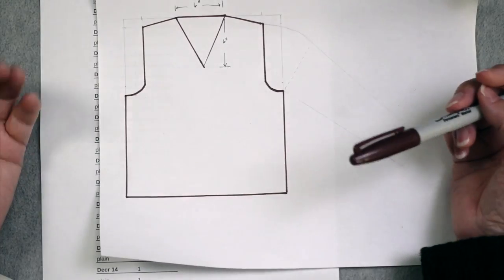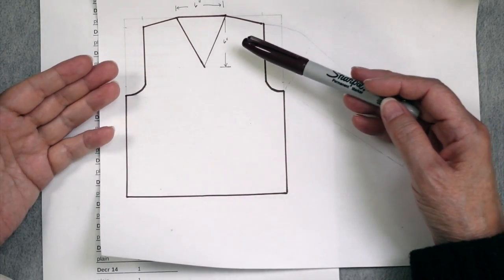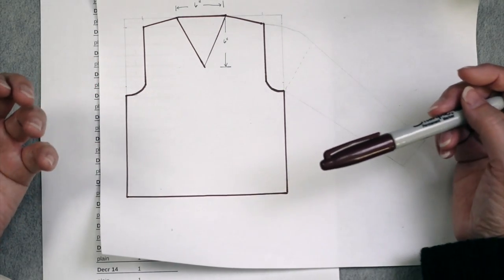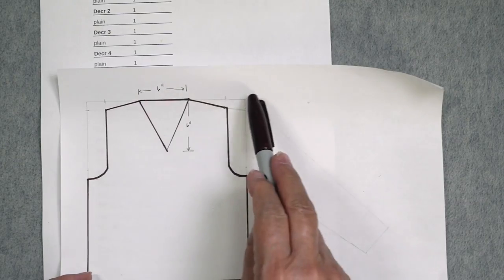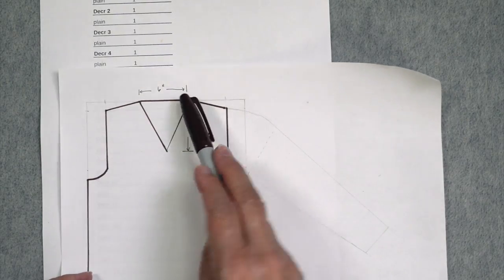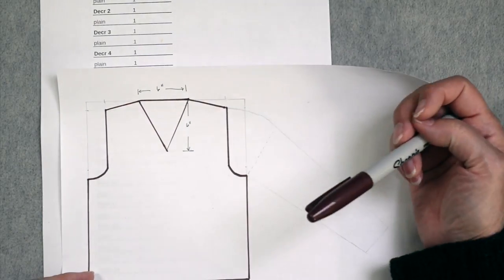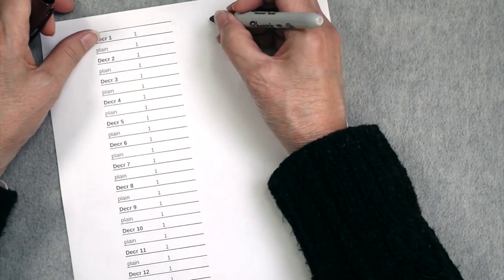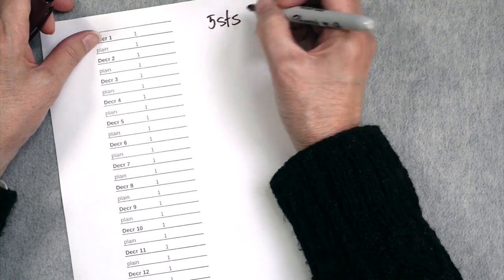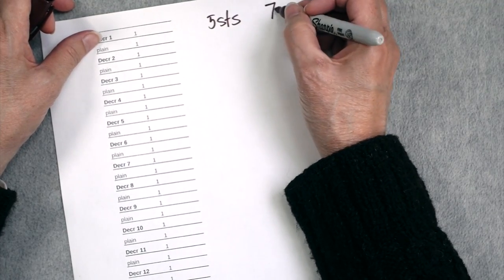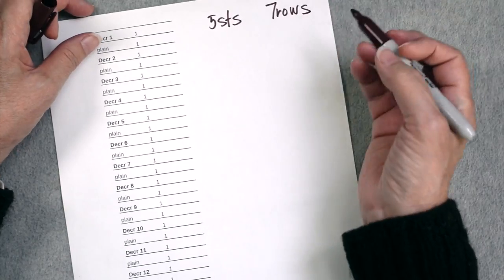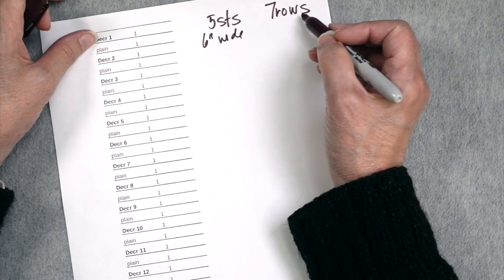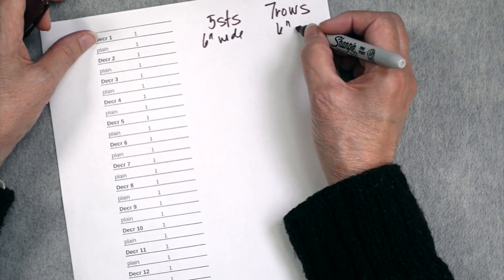Let's do some example calculations for a couple of different V-necks so you can see how you would plan the shaping. Let's start with one that is six inches wide and six inches deep, and we're going to plan it for worsted weight yarn — typically five stitches per inch and seven rows per inch. So we want something that is six inches wide and six inches deep.